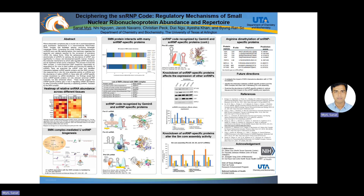Very interestingly, the abundance of SNARFs varies significantly in a tissue and developmental manner. The heatmap of relative snRNA quantified by qPCR across different tissues showed that fetal and adult tissues have significant variation in snRNA expression level. However, the molecular mechanism of this abundance and its repertoire remain poorly understood.